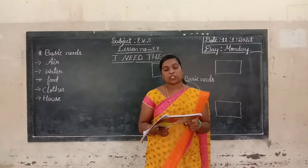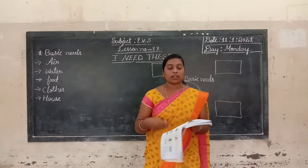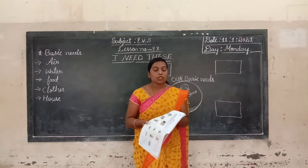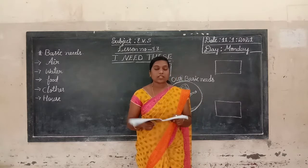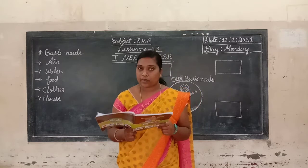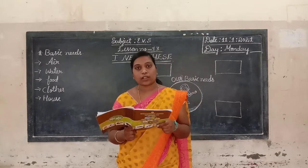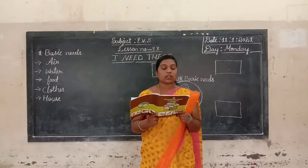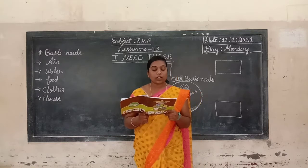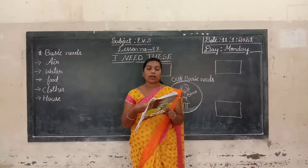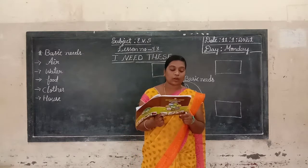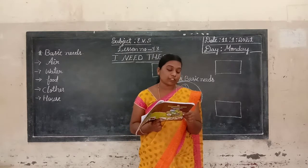What are the children doing in the pictures? In your textbook page number 83 you can see some pictures. Those pictures show some activities. You see the pictures and identify what the children are doing. In the first picture, you have to see — in the first picture the girl is eating.